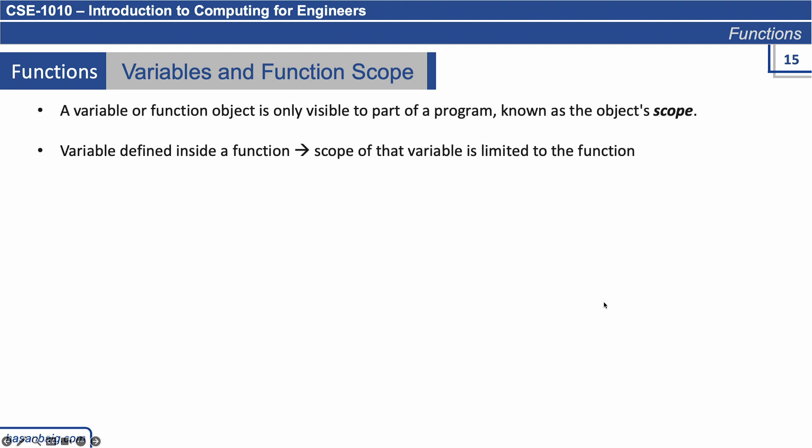So variables and function scope. A variable or function object is only visible to a part of a program known as the object's scope, and this is important. A variable defined inside a function — the scope is only limited to that function.